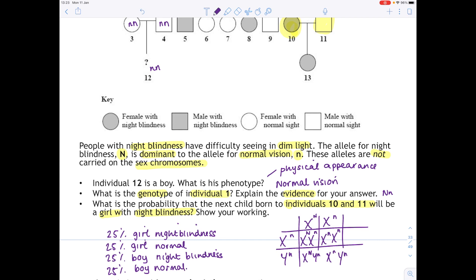So if we answer the question, what is the probability that the next child born to individuals 10 and 11 will be a girl with night blindness? It's 25% or 0.25 if we're going to be official and refer to probability.